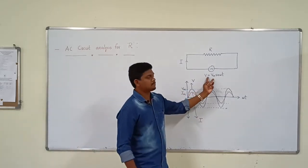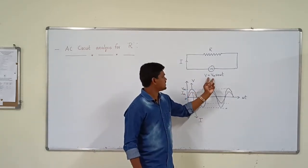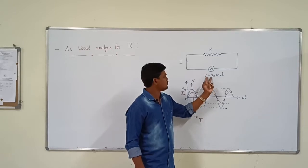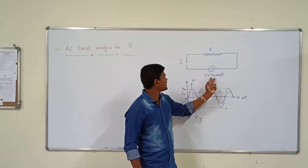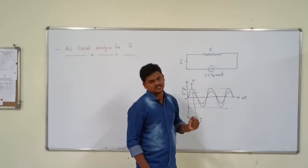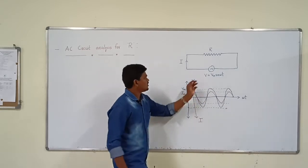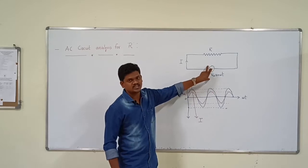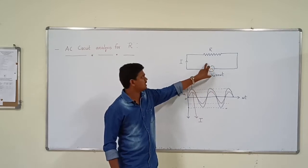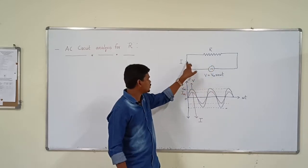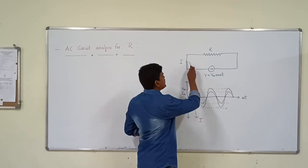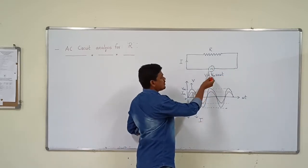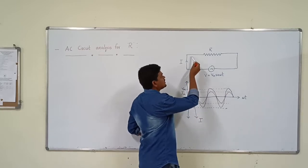Simply, AC supply is given in terms of voltage source. So in AC voltage source, V equal to Vm sin omega t is applied to the resistor. Whenever a voltage source or current source is applied to the resistor, it forms a closed loop. Whenever the voltage source and resistor are there, power is transferred by the current.